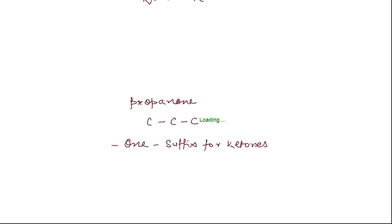In ketones, what is the functional group present? It is C double bond O.